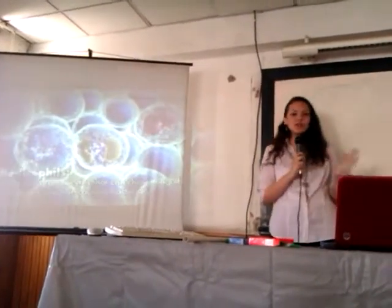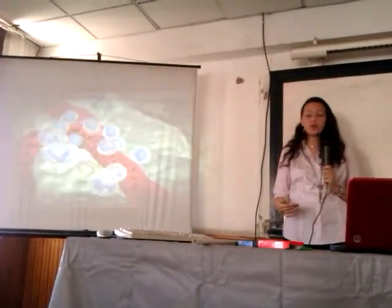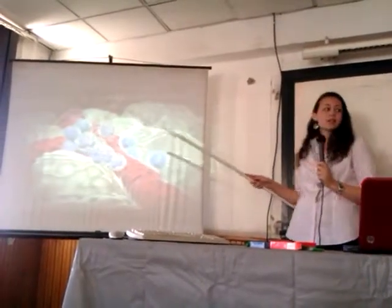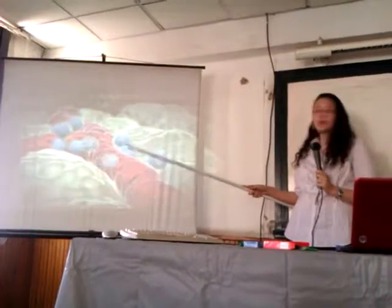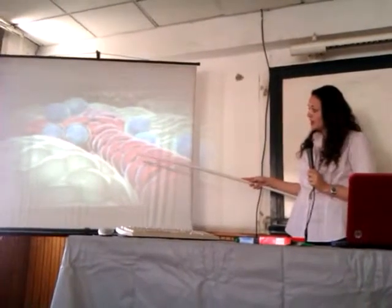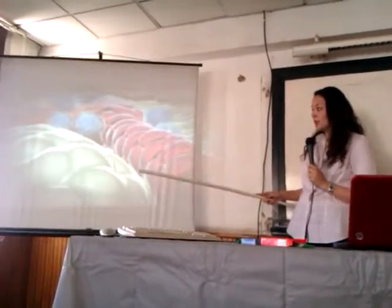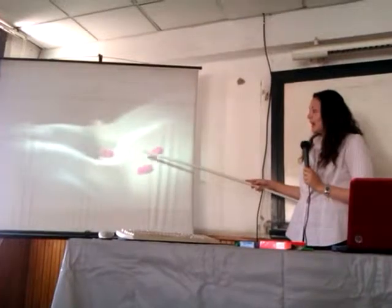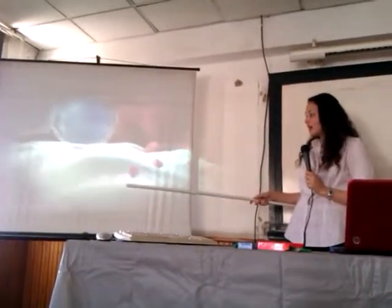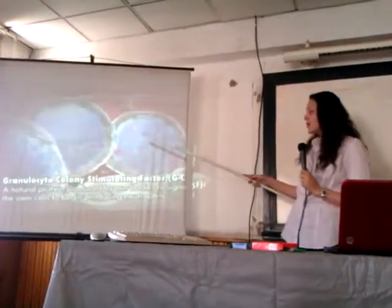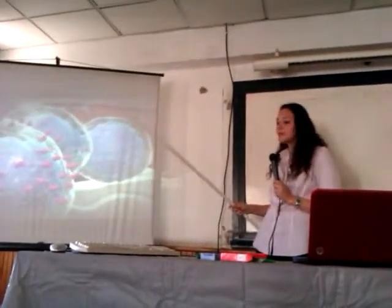Neutrophils live in circulation for only three to six days, so our body is constantly making neutrophils to protect us from bacteria. Certain cells in our body secrete specific proteins to signal undifferentiated mesenchymal cells to form new neutrophils. These proteins contain a special factor called granulocyte colony-stimulating factor. As you can see, they are now stimulating the undifferentiated mesenchymal cells, giving them the signal to differentiate specifically into neutrophils.